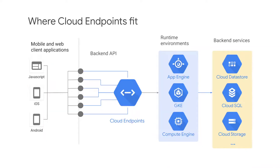Cloud Endpoints supports applications running in GCP's compute platforms in your choice of language and your choice of client technologies. It allows you to establish a standardized API for mobile or web client applications to enable them to connect to and use a back-end application on App Engine, and also provides the mobile or web application access to the full resources of App Engine.